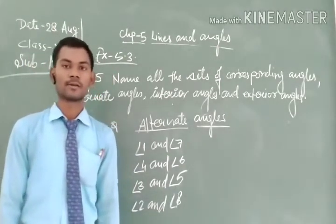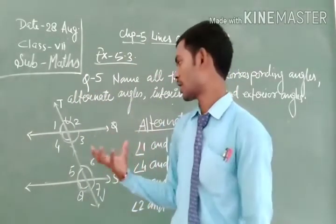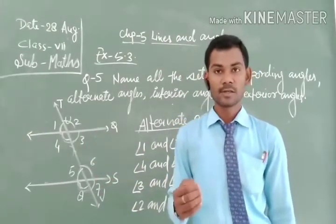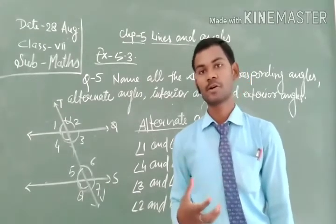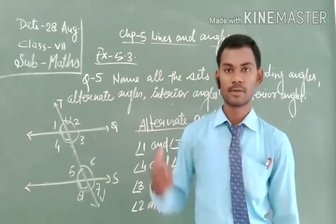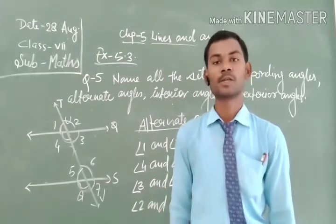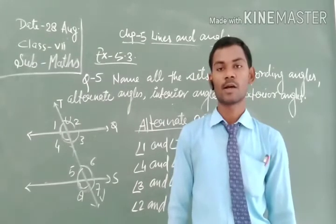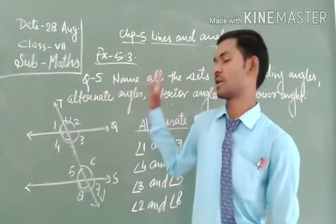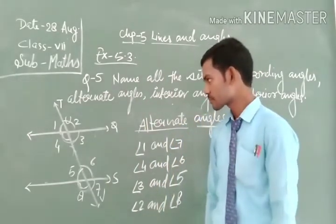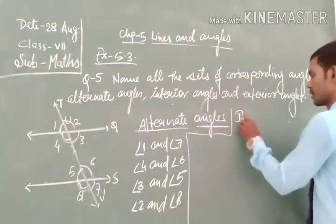These are the sets of alternate angles. All the answers we are finding here are logical questions, and logic comes from the definition. Without the definition, we cannot apply the logic to get the given sets of angles. You are all recommended to please learn and remember the definitions of all types of angles and other important topics on which these types of questions are based. Next, we have to find the interior angles.